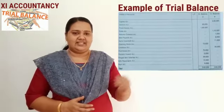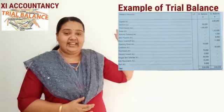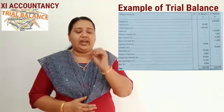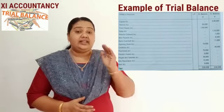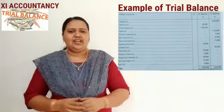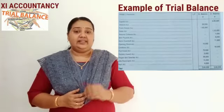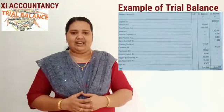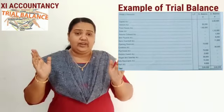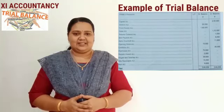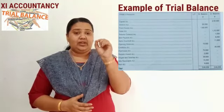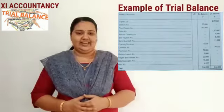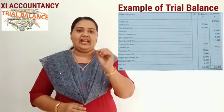Now let us see an example of a trial balance. All expenses accounts and assets accounts will have debit balance — that is, in all expenses accounts and assets accounts, the debit side will be more than the credit side. That is known as debit balance. Liabilities account, capital account, and revenue account will have credit balance.